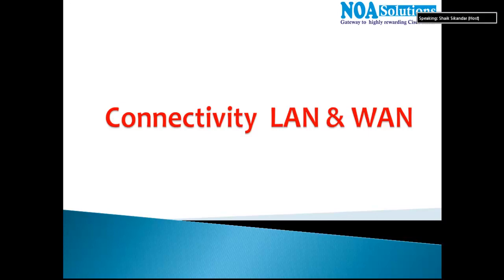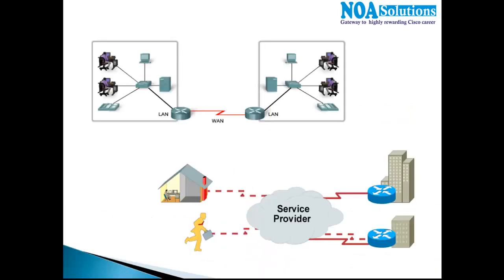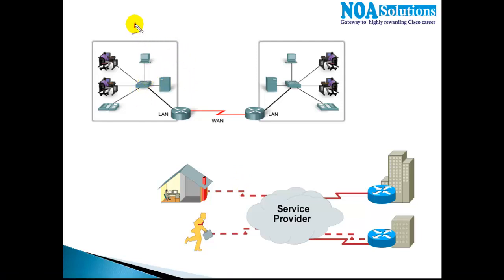In this section we'll try to understand the WAN connection and how it is built, with some basic understanding on leased lines. Going back to basics from previous classes, we've already seen how the LAN setup is built. In a LAN setup, computers are connected to a centralized switch using UTP straight cable, and the same cable is used to connect from the switch to the router.